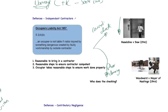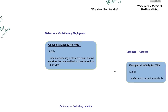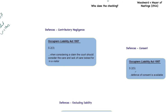There are also the two standard defenses: contributory negligence and consent. Section 2(3) says the court should consider the care and lack of care of the visitor — if the claimant contributes to the accident and injury, an award for contributory negligence may be made. Section 2(5) provides the defense of consent — a visitor must consent to the risk of negligence on the part of the occupier. Both operate in the same way as in ordinary negligence.